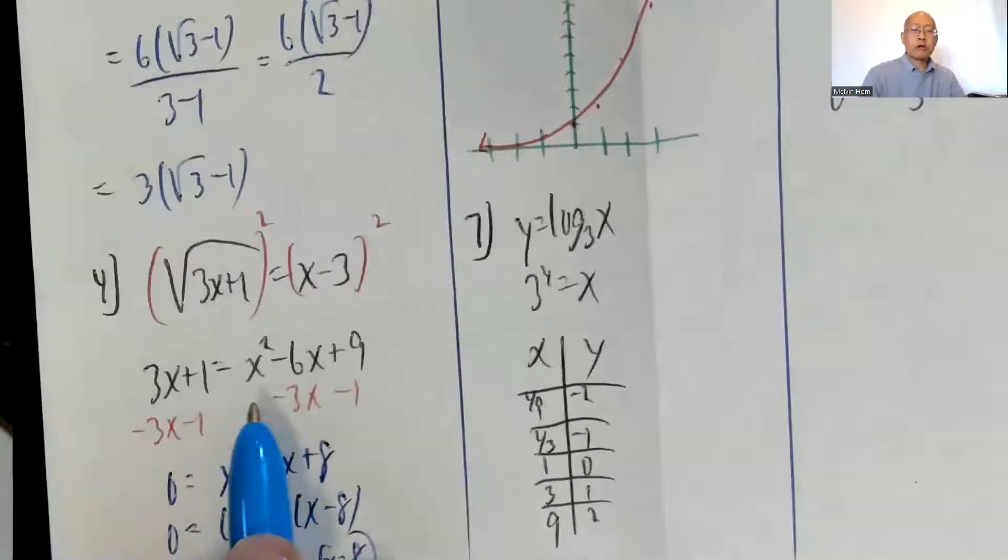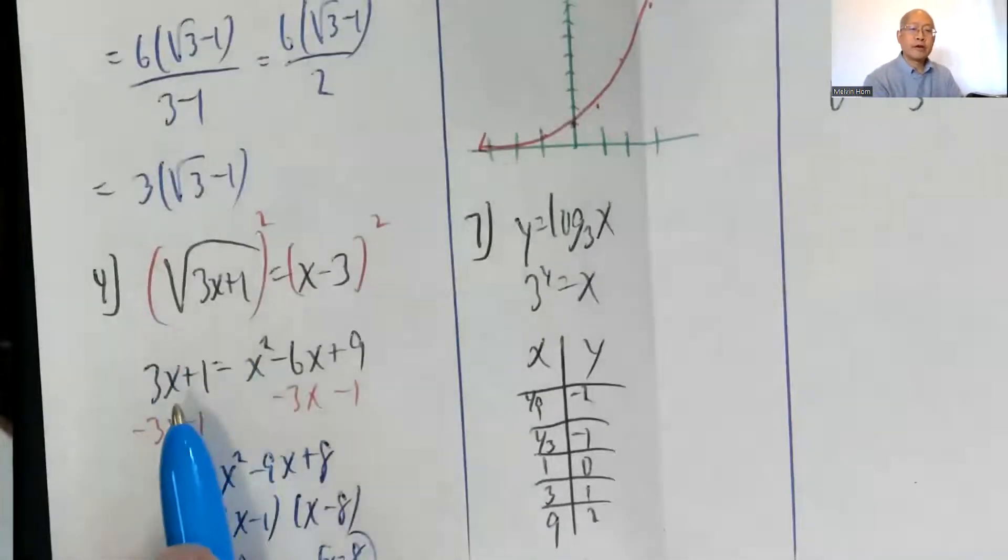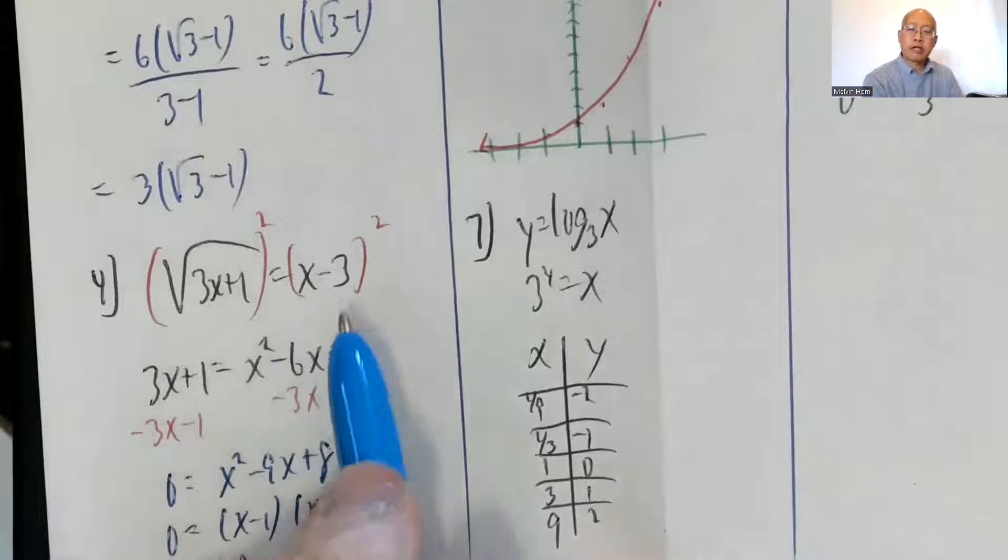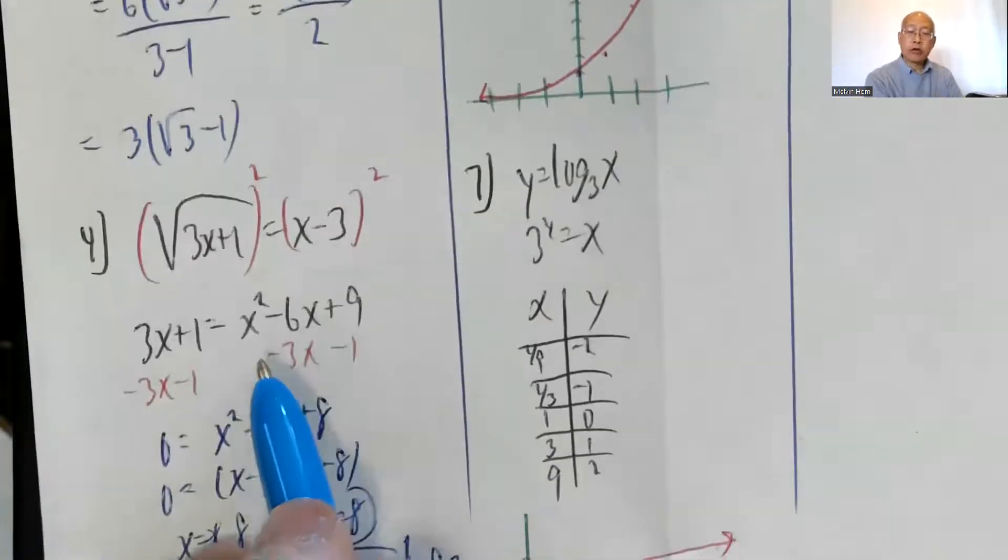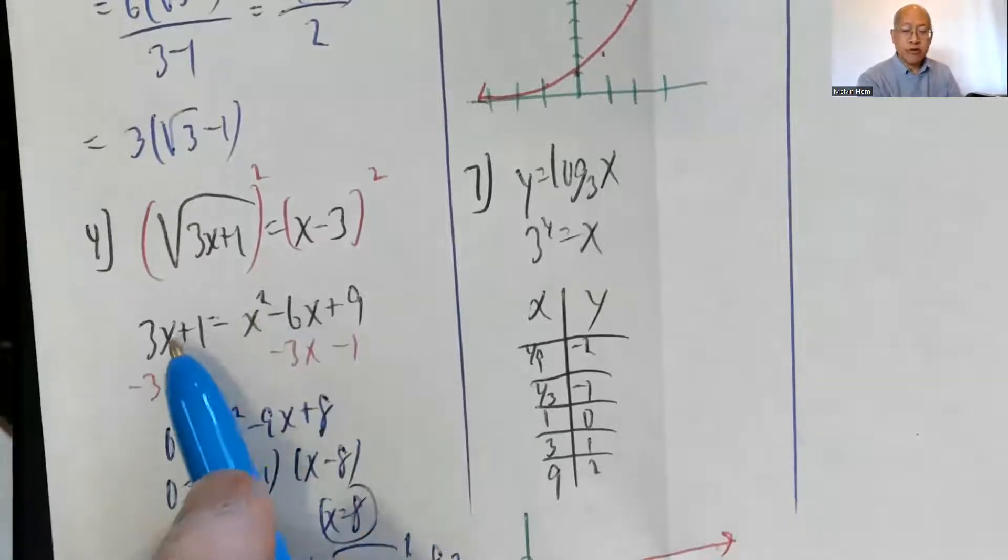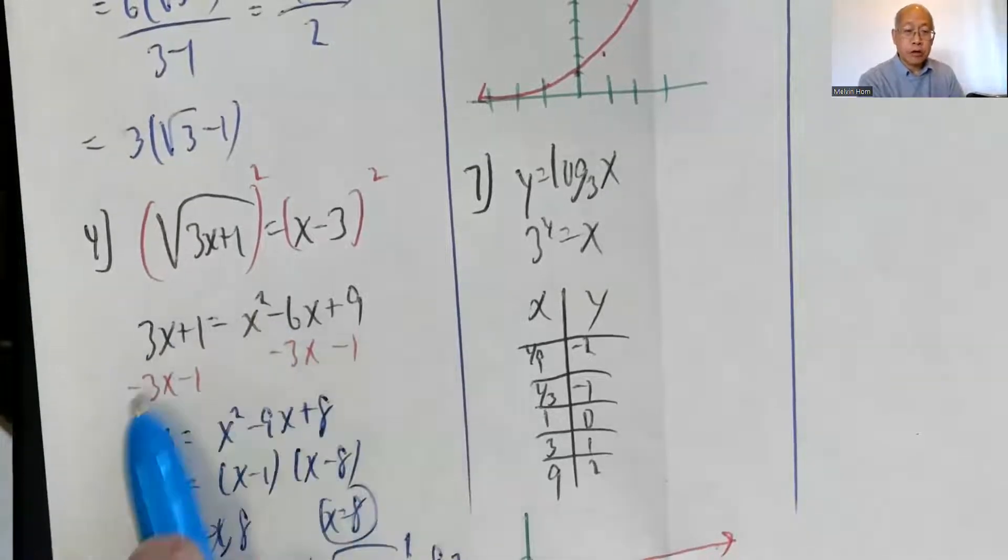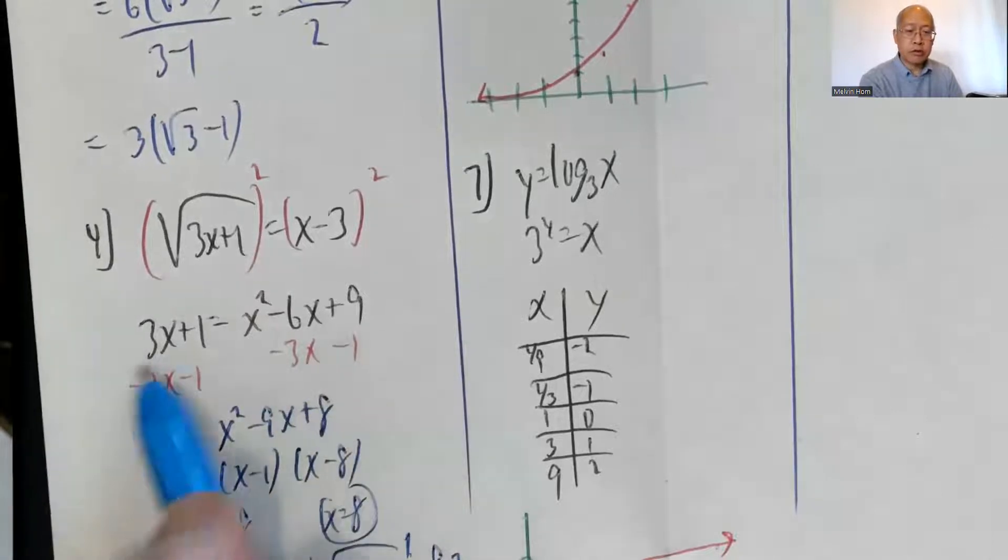Number 4: Square both sides. The square root squared is just 3x plus 1. x minus 3 squared is x squared minus 6x plus 9. This is a quadratic equation, meaning there's a squared term. So leave one side having 0.